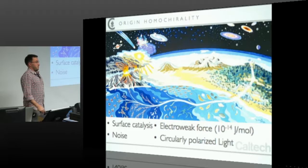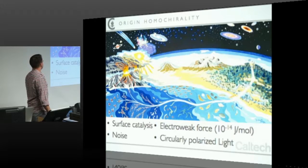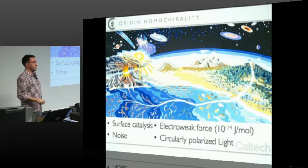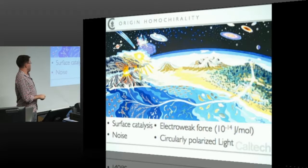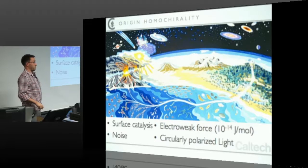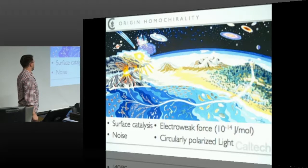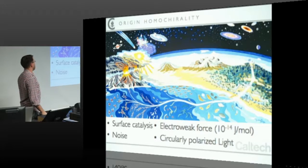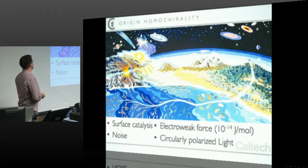People have thought about this quite a bit. If you're thinking about an early Earth with primordial soup, there are lots of ways you could generate that initial excess: surface catalysis, binding to clays preferentially, or it could be totally random — a small fluctuation in chemistry bumping you in one direction. There are more exotic proposals like the electroweak force, which is incredibly weak but operating over a planetary scale for millions of years could push you in the right direction. And there's circularly polarized light — light can be handed, so circularly polarized light will preferentially destroy or do preferential photochemistry on chiral molecules.